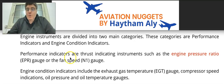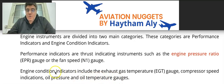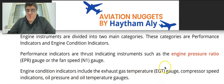On the upper E-CAM we have primary engine performance indicator parameters. On the lower E-CAM we have engine condition indicators, such as oil pressure, oil quantity, and oil temperature. Oil pressure and oil temperature gauges are called engine condition indicators.